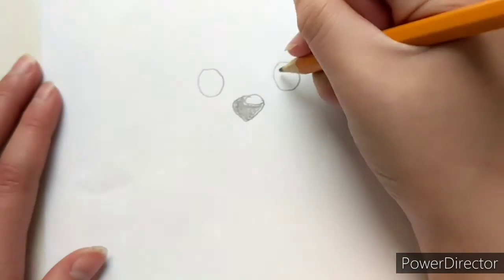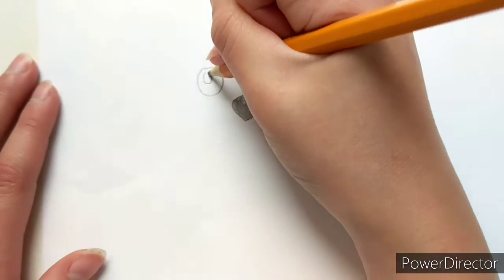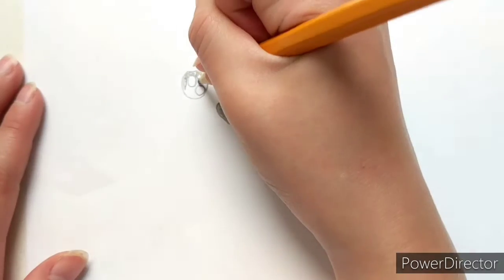So next we're going to be going back to the eyes and just draw two circles in it and shade in the rest.